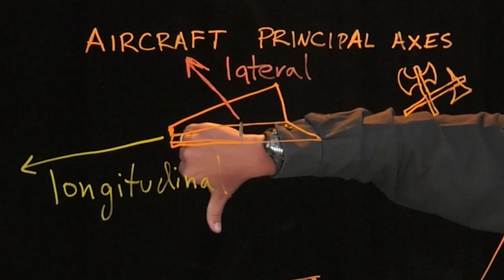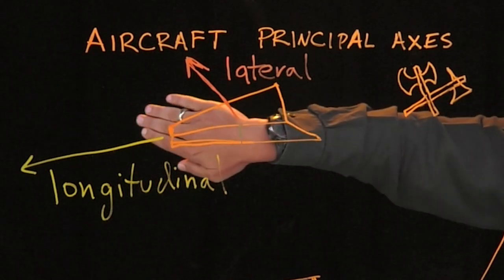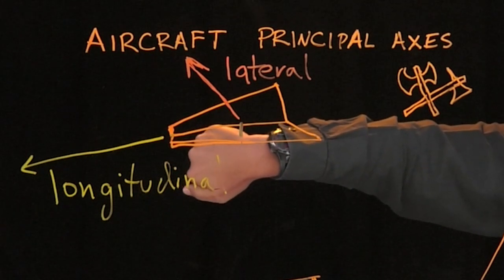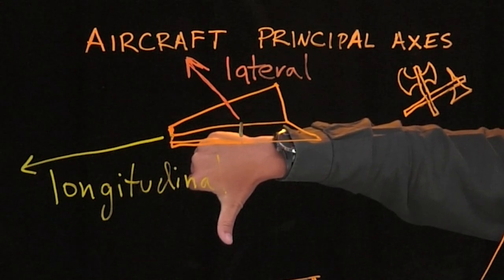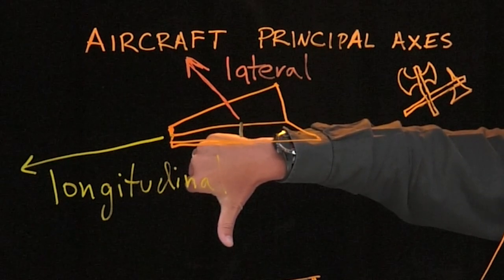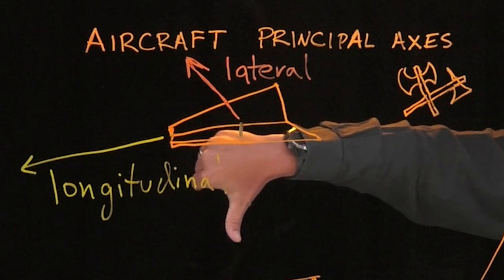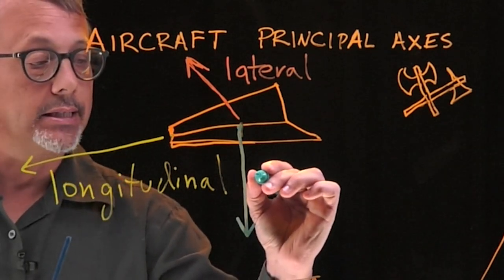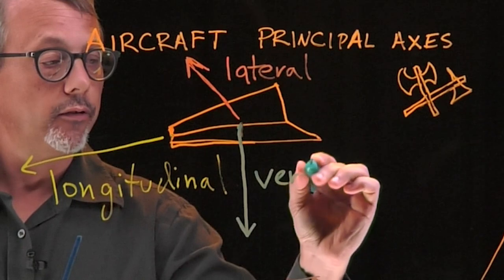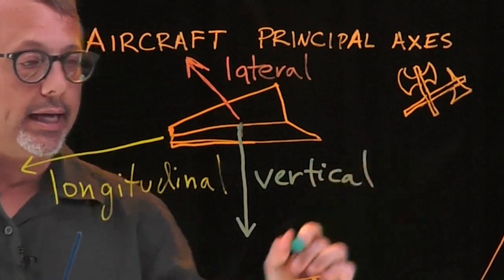So if I want a right-handed system with longitude first, lateral second, then my vertical must be going down. And that is indeed the system that we are going to use for our aircraft principal axes. Once again, this downward axis is known as the vertical axis.